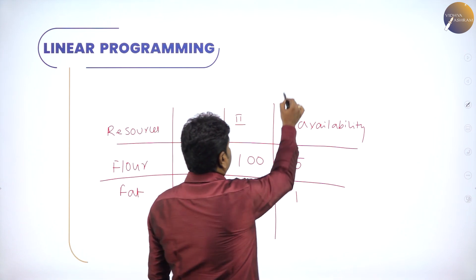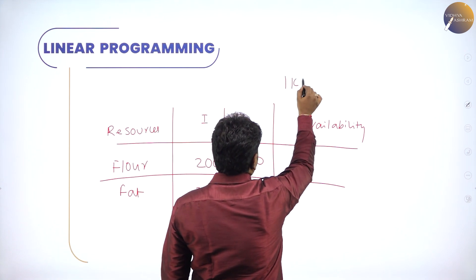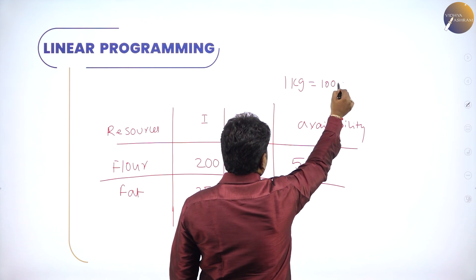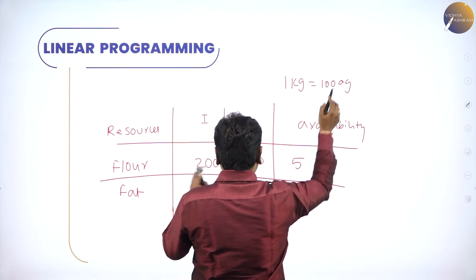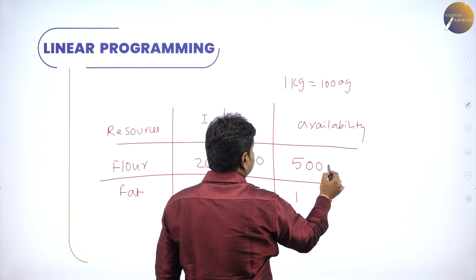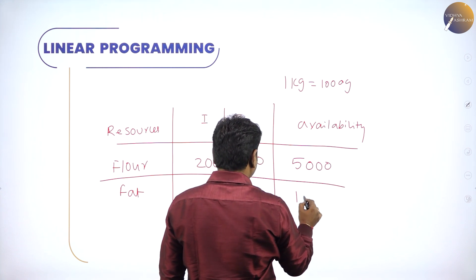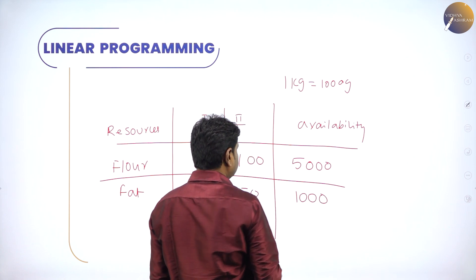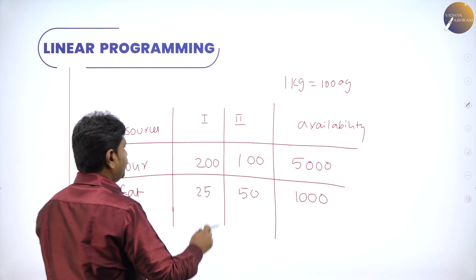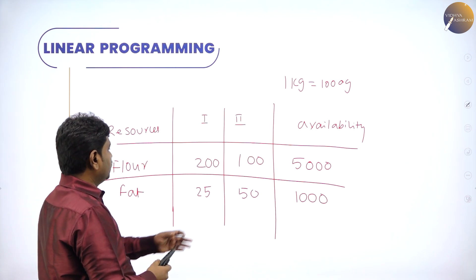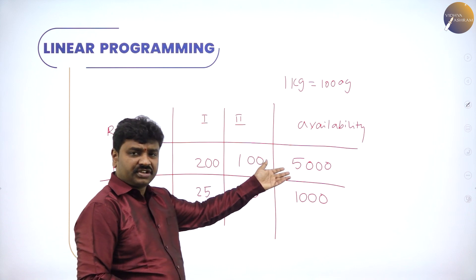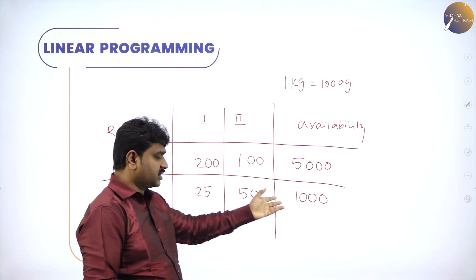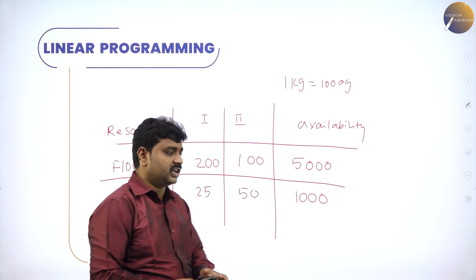Since 1 kg is 1000 grams, we convert into grams. So we write 5000 grams for flour and 1000 grams for fat, because the ingredient amounts are given in grams. We don't have more than this — we have 5 kg of flour meaning 5000 grams of flour, and 1 kg of fat meaning 1000 grams of fat.